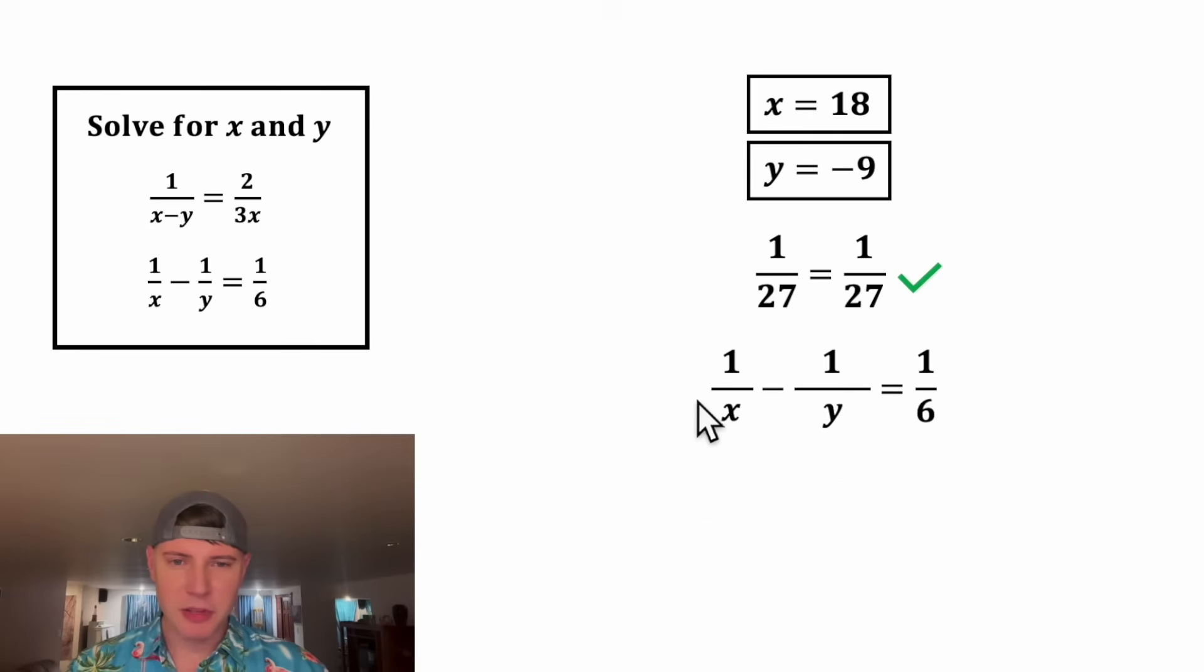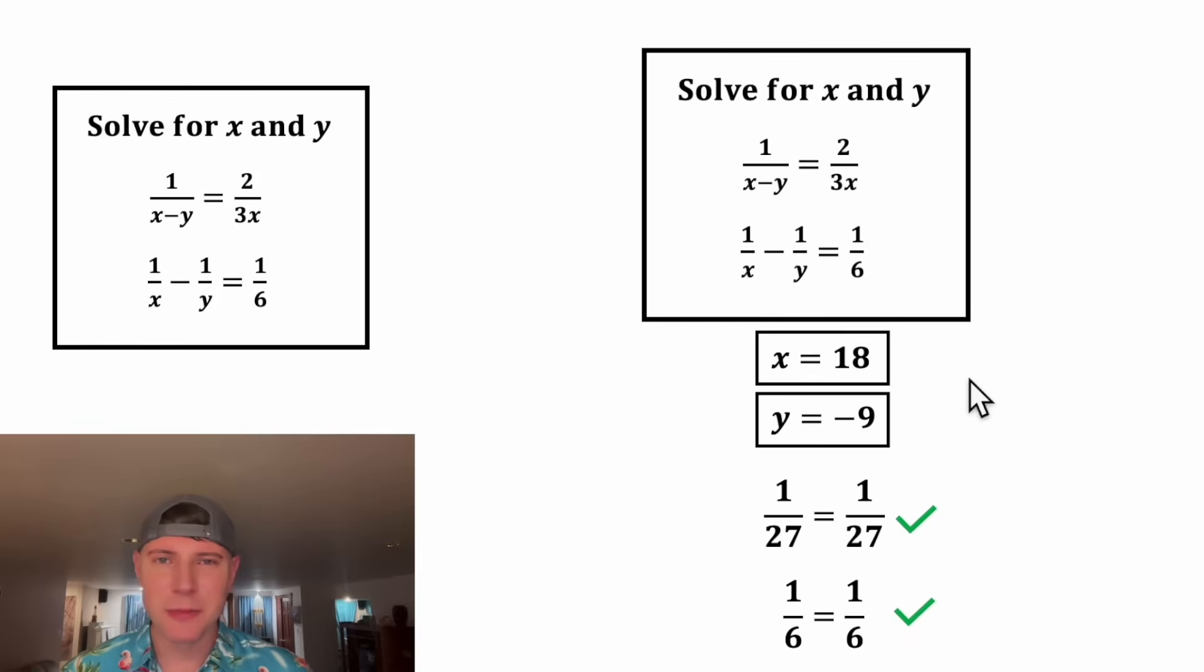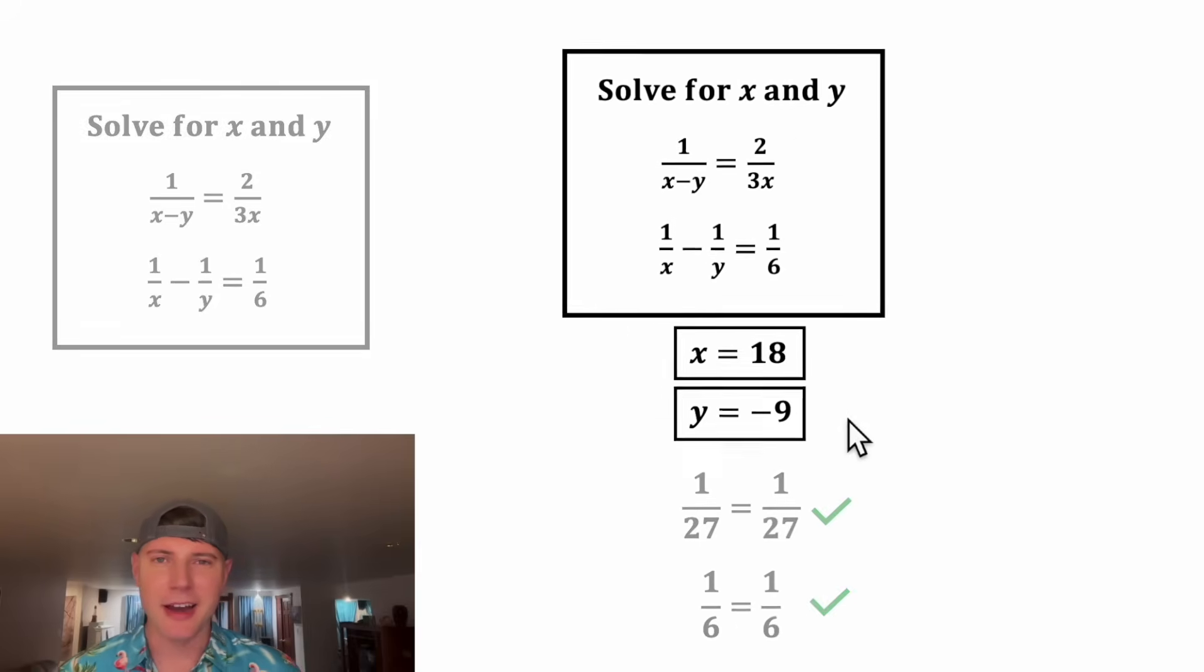Now let's do this one. In place of x, we plug in 18, and for y, negative 9. This minus negative 1 ninth becomes plus 1 ninth. We can give these fractions a common denominator by multiplying top and bottom by 2. 2 times 1 is 2, and 2 times 9 is 18. Then 1 18th plus 2 18ths equals 3 18ths, which simplifies to 1 6th. So we get 1 6th equals 1 6th, and that checks out. For this system of nonlinear equations, x equals 18 and y equals negative 9. How exciting.